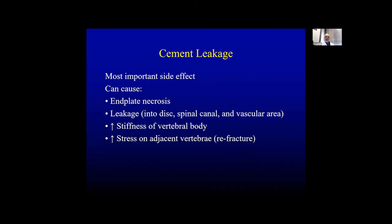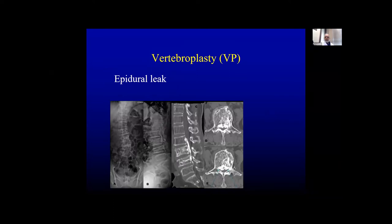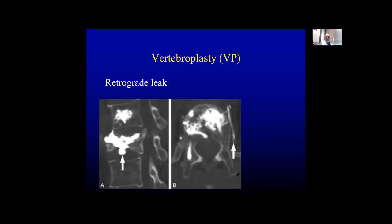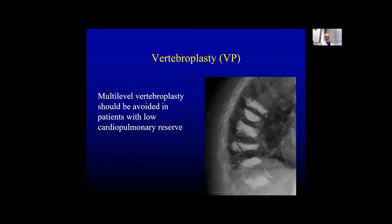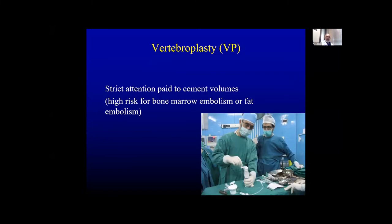Cement leakage is one of the most important complications after augmentation, and can cause end plate necrosis, leakage into the spinal canal, increased stiffness, and increased stress on adjacent vertebrae. Multi-level vertebroplasty should now be avoided in patients with low cardiopulmonary reserve, with strict attention to cement volume because of the high risk for bone marrow embolism or fat embolism. There are case reports of pulmonary cement embolism after high-volume cement injection.